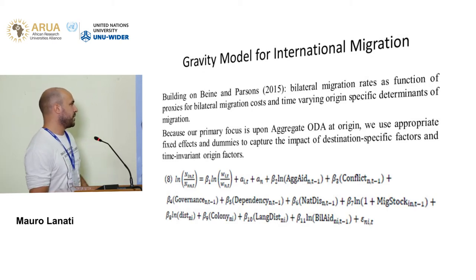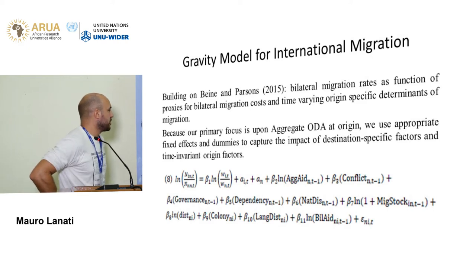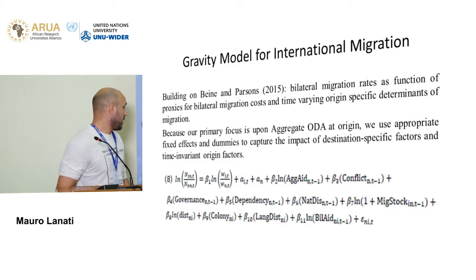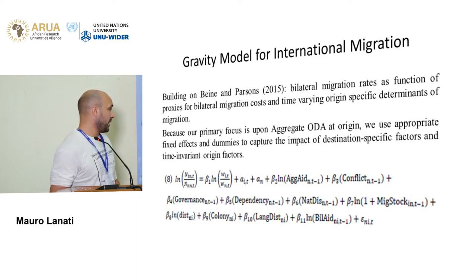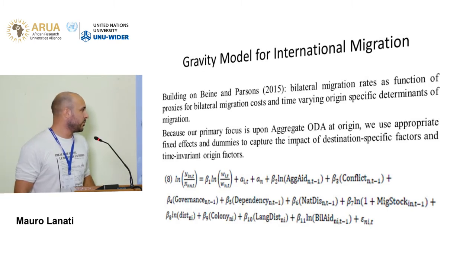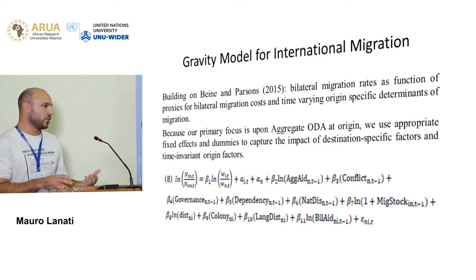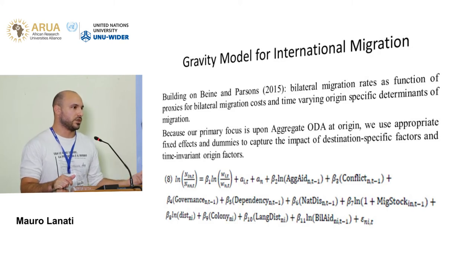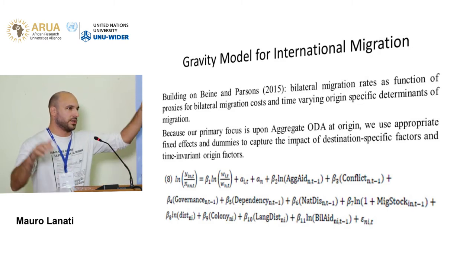Bilateral migration rates is the dependent variable, which is a function of many controls. Our main variable of interest is total aid received by the country of origin at time t-1. Notice that the stocks that other papers use as a dependent variable, here we include as a control. Because we think that the flows of migrants at time t may depend on the stock, due to the information channel in the country of destination — the higher the stock, the higher the flows.